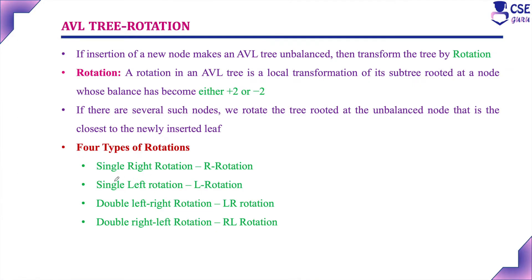There are four types of rotations in AVL tree. Under single rotation, there are two types: single right rotation and single left rotation. Under double rotation, there are two types: double left-right rotation and double right-left rotation.